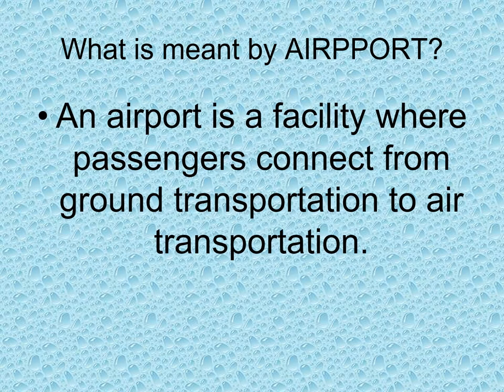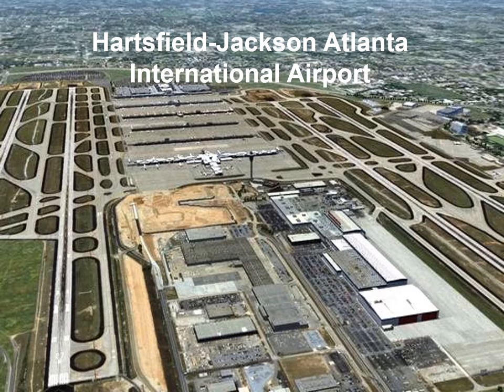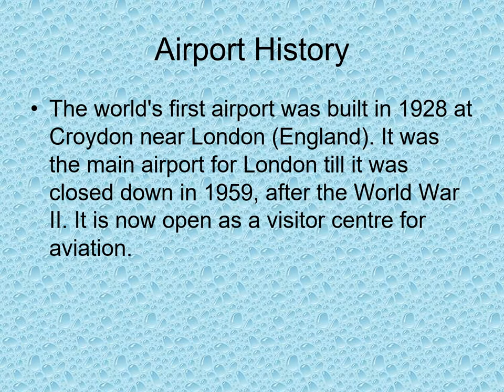An airport is a facility where passengers connect from ground transportation to air transportation. The Atlanta International Airport is one example. The world's first airport was built in 1928 at Croydon, near London — it was the main airport for London until it was closed in 1959 after World War 2, and is now open as a visitor center for aviation.